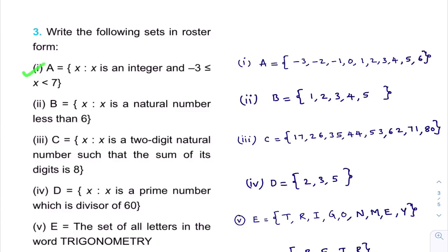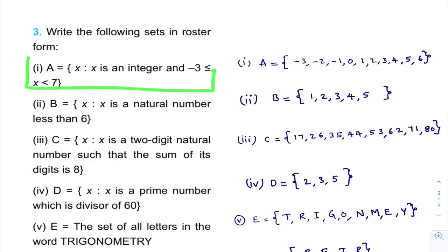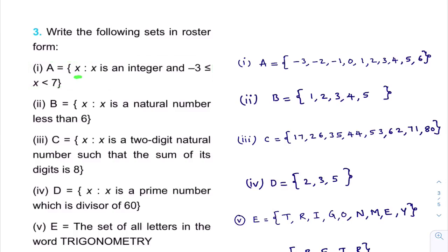Observe this first question. Set A is given as: x such that x is an integer and minus 3 less than or equal to x less than 7. Here this set is in Set Builder Method, because when you see 'x such that' and its property is given.